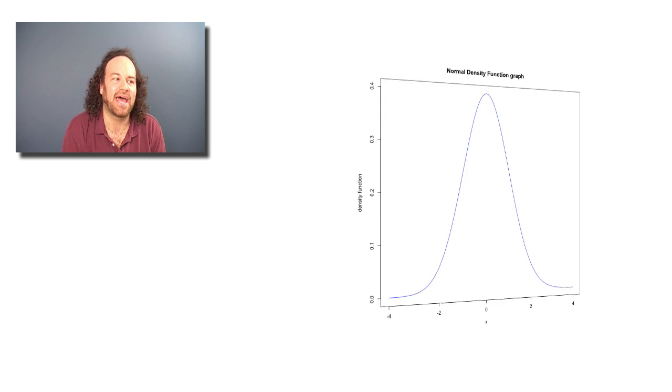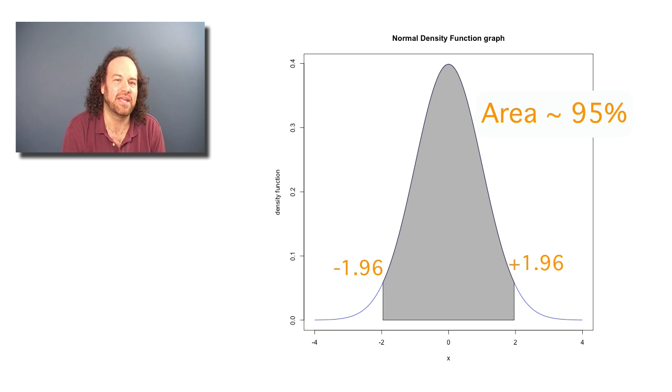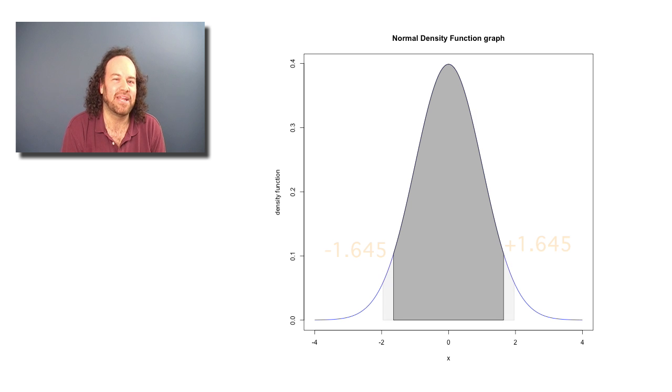Just by going back to that graph for the normal distribution and saying, we knew that if you were at plus or minus 1.96, then you'd have about 95% of the area, but you can do differently. For example, if you just do between minus 1.645 and plus 1.645, then you'll still get about 90% of the area. So you can use that value to make 90% confidence intervals.